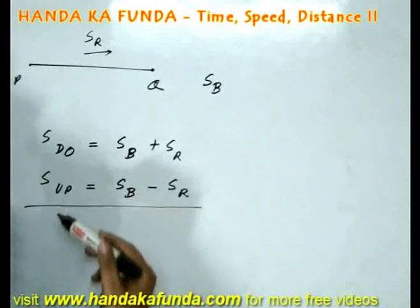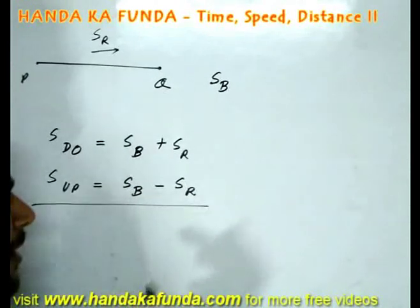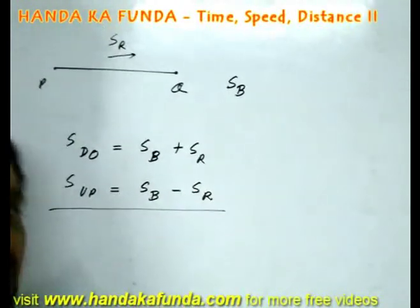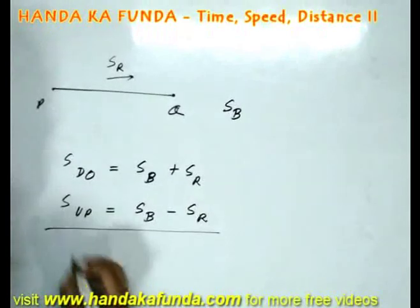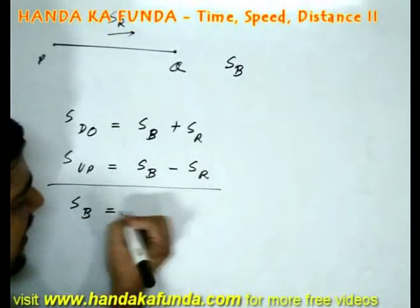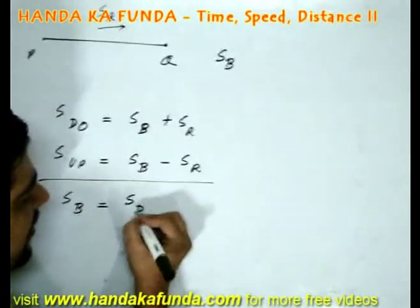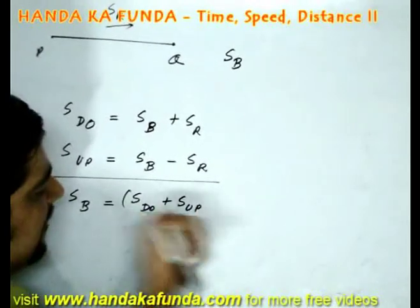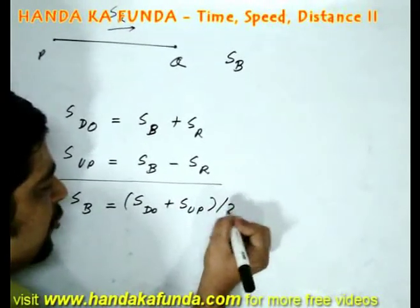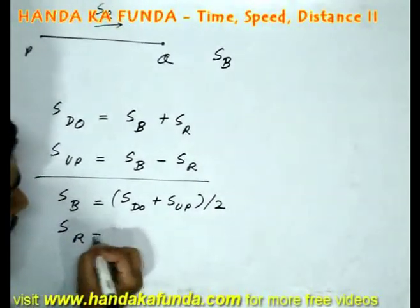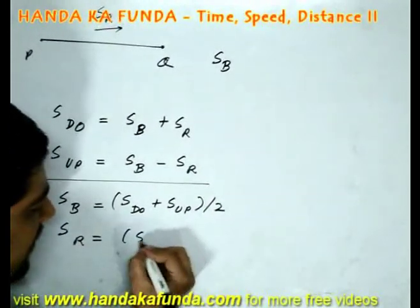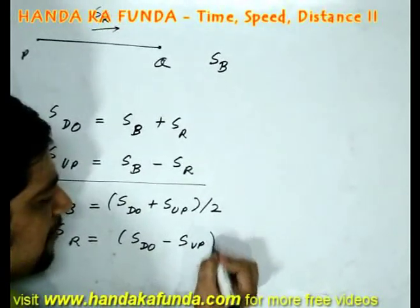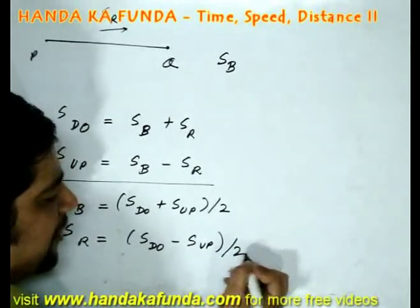What if I am given the downstream and upstream speed — can I find the speed of the boat and the speed of the river? Yes. Speed of the boat will be given by downstream speed plus upstream speed divided by 2. And the speed of the river will be given by downstream speed minus upstream speed divided by 2.